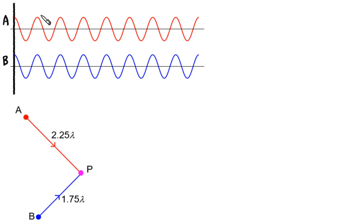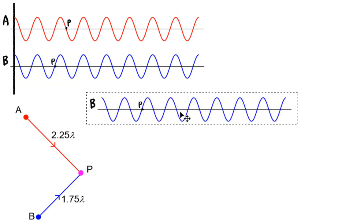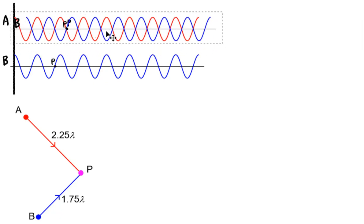So that's one lambda, two lambdas, two and a quarter lambdas. So that is P. P is right here. P is also one and three quarter lambdas away from B. So that's one lambda and three quarter will be here. Again, we are going to align the point P together.